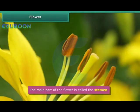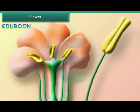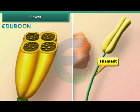The male part of the flower comprises one or more stamens. Each stamen is a stalked structure. The stalk is called the filament. Atop the filament are two sacks containing pollen. These sacks are known as anthers.